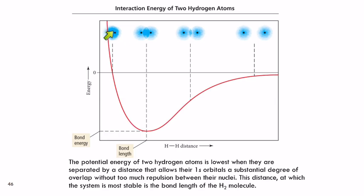But what's going on here is when these nuclei that have positive charges get too close together, they're going to repel each other. So there's this sweet spot where we maximize the attractions between the electrons of one atom and the nucleus of the other, and we minimize the repulsions of the two nuclei.